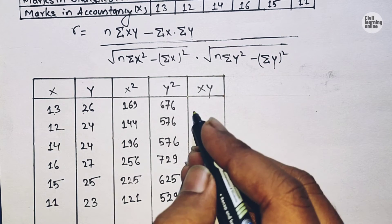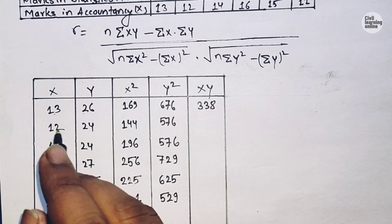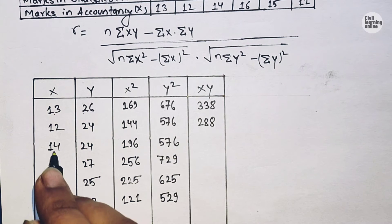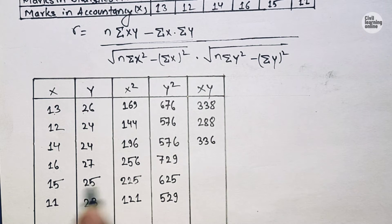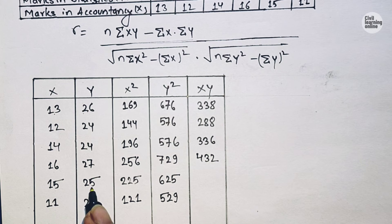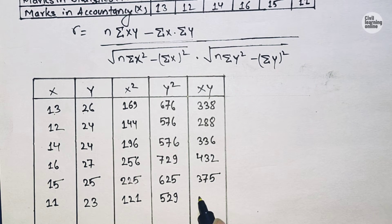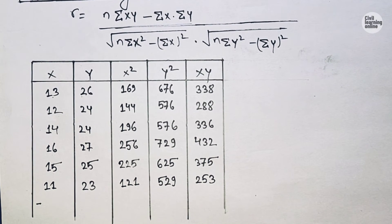Now we calculate the XY column by multiplying each X by its corresponding Y: 13 times 26 gives 338, 12 times 24 gives 288, 14 times 24 gives 336, 16 times 27 gives 432, 15 times 25 gives 375, and 11 times 23 gives 253.